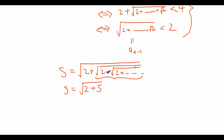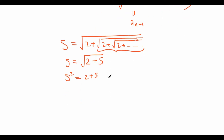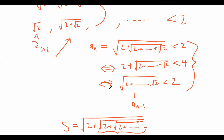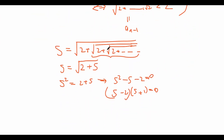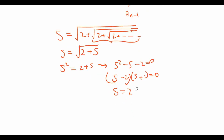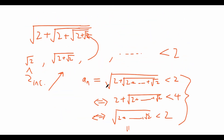So s equals the square root of (2 plus s). This rearranges to s squared equals 2 plus s, which means s squared minus s minus 2 equals 0, which factors as (s − 2)(s + 1) = 0. Now clearly s can't equal negative 1, because the entire sequence is positive. Therefore s must equal 2, meaning this infinite sequence of nested square roots converges to the value 2.